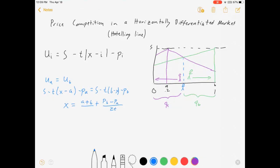That's going to be over 2 also. All right, so that's X. That is the demand for firm A. Everyone to the left of this blue guy is QA. And then QB, the demand for firm B, is equal to 1 minus X.